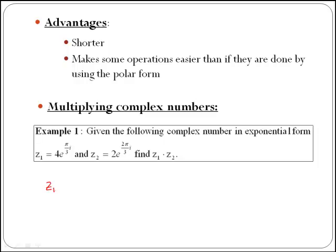If we just write z1 times z2, then we have 4e^(π/3i) times 2e^(2π/3i). In order to multiply this expression, we are going to multiply numbers with numbers, so 4 times 2 which will give you 8, and then what is left is the multiplication of two exponentials: e^(π/3i) times e^(2π/3i).